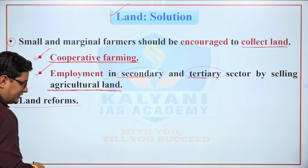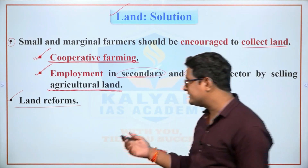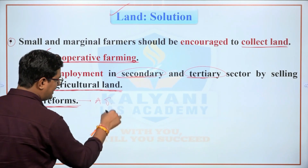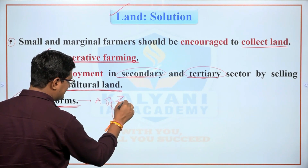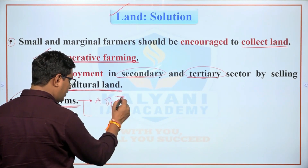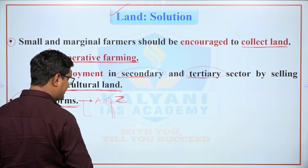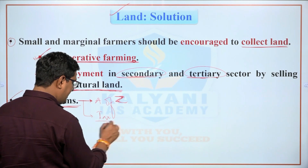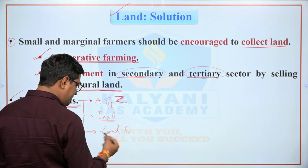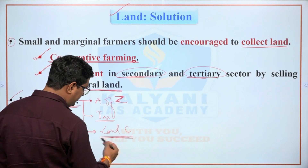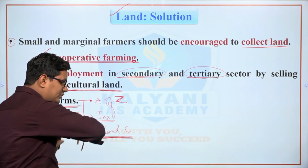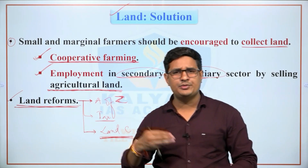To increase agricultural productivity, the government of India implemented land reforms. These included abolishing the zamindari system so farmers were free to produce and not burdened by taxes. Another reform was land ceiling, under which land exceeding a particular limit was taken from large landholders and distributed to landless farmers, thereby replacing large estates with small farmer ownership to increase agricultural production.